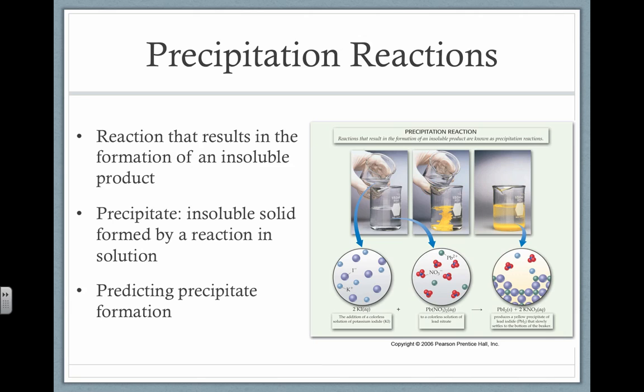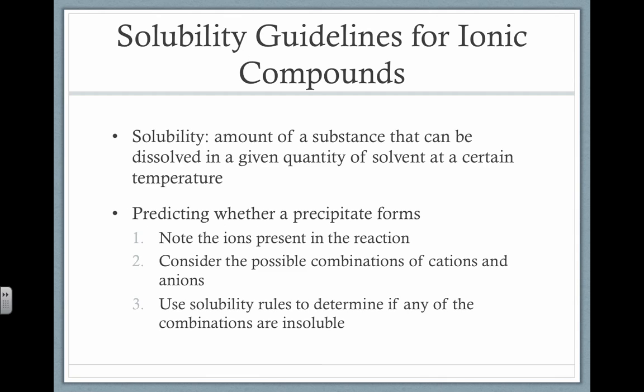We can look at chemical reactions and we can actually predict the formation of certain precipitates because we have solubility rules. The solubility rules basically tell us how much of a substance can be dissolved in a certain amount of solvent at certain temperatures. As the temperature changes, the solubility tends to change.